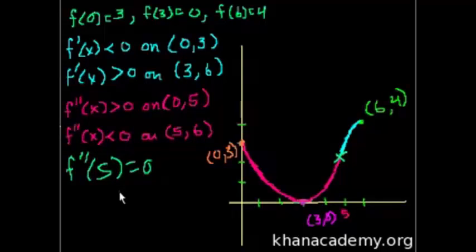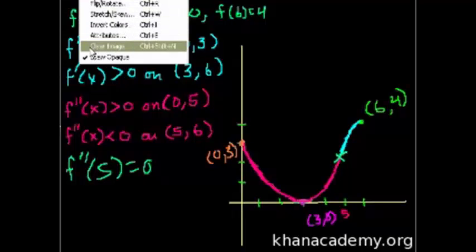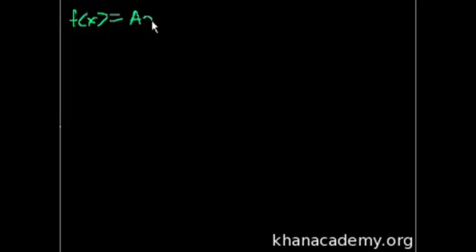Since I have time, let me do one more bonus problem. It says: prove that a quadratic function has no inflection points. What does a quadratic function look like? f(x) is equal to ax squared plus bx plus c. And it says prove that this has no inflection point. Well, what's an inflection point? It's a point where the second derivative is equal to 0. So let's figure out what the second derivative is.